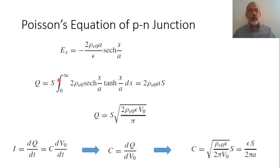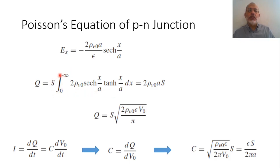From the electric field, we can find the surface charge density as epsilon multiplied by E. And from the surface charge density integrated with respect to the surface, we can obtain the total charge. The charge accumulated on the surface is the integration of the surface charge density multiplied by the surface area, which gives 2 * rho_V0 * A multiplied by the surface area S, where A is the thickness of the depletion layer inside the PN junction.